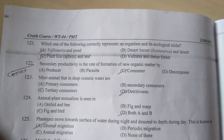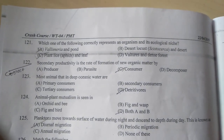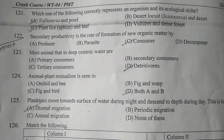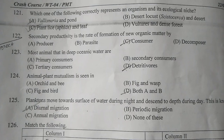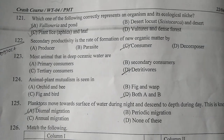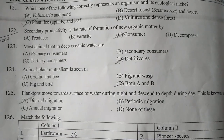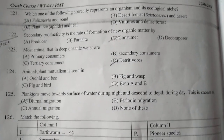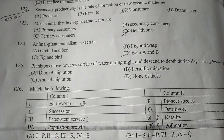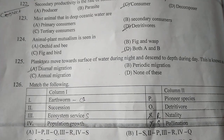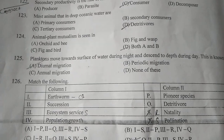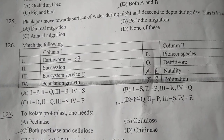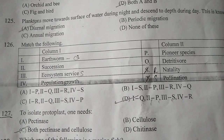Mutualism is seen — correct answer D — both A and B — that means orchid and fig and wasp. Question number 126: Match the following — the correct answer is D.